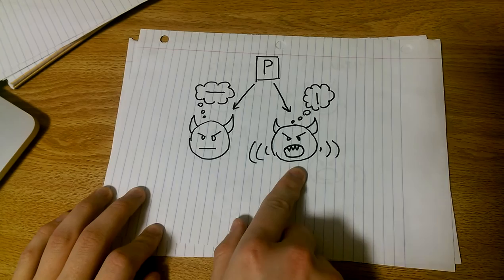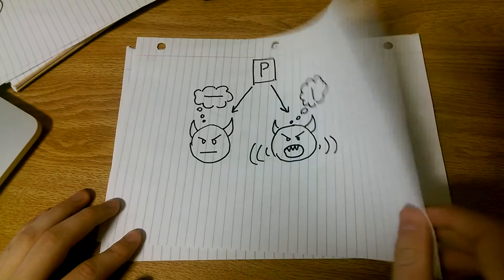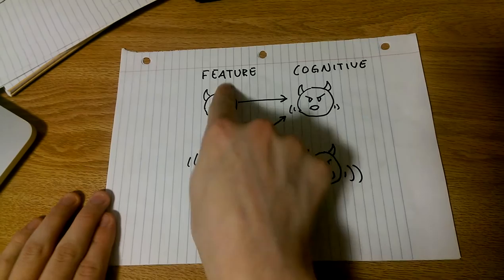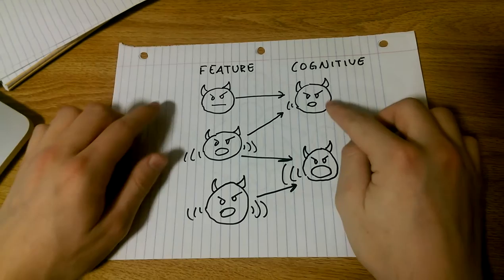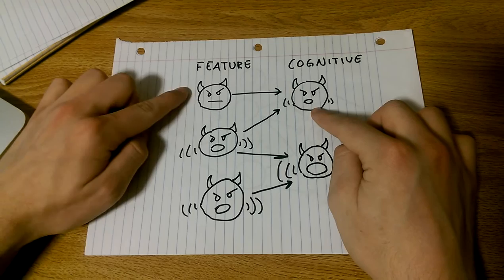The cognitive demons are listening to specific assigned feature demons and then they yell based on how many of their feature demons are yelling. So here we have a group of feature demons hooked up to some cognitive demons. You can see that this feature demon is silent, these two are yelling. This one is hooked up to a silent one here and a yelling one, so it's yelling relatively quietly compared to this one which is hooked up to two yelling feature demons.